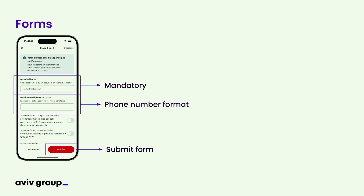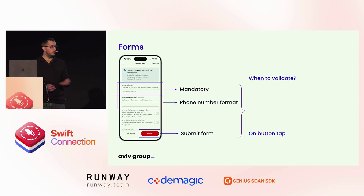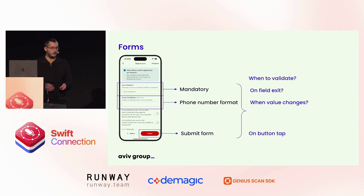The user can submit the form through the validate button. One key question we have to ask for this kind of form is: when to validate the fields? The obvious answer is when the submit button is tapped. But there are other cases where we can validate each field to be more reactive to the user — for example, when the user enters and exits the field, or when the value changes.